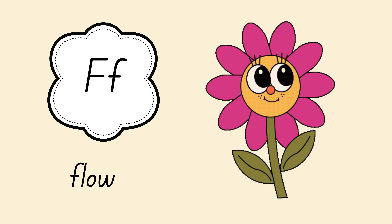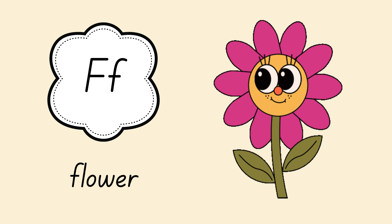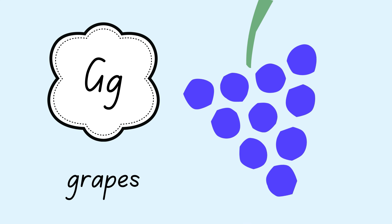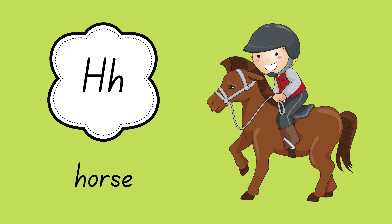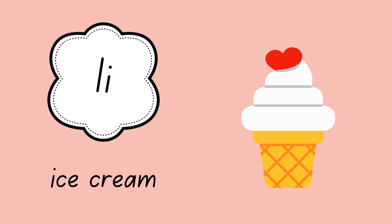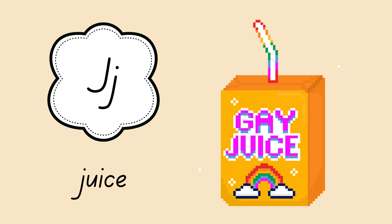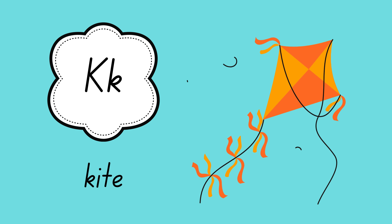F for flower. G for grapes. H for horse. I for ice cream. J for juice. K for kite.